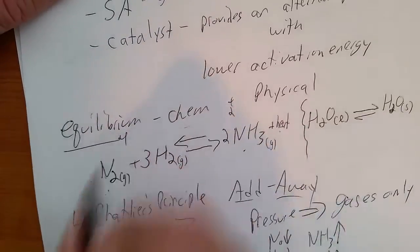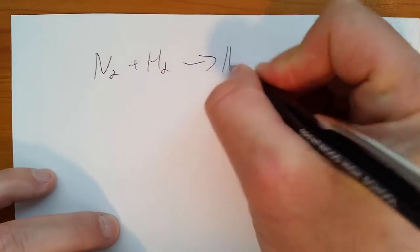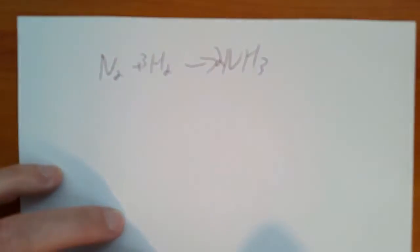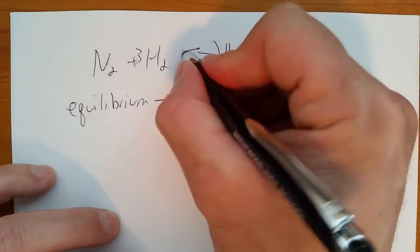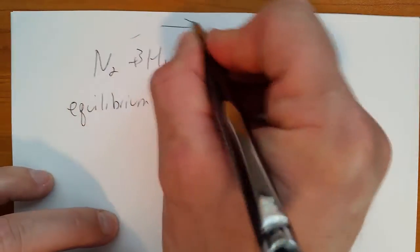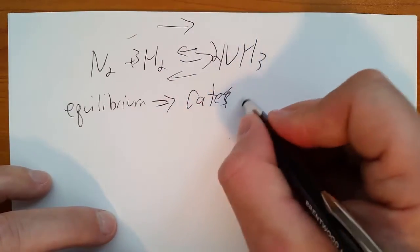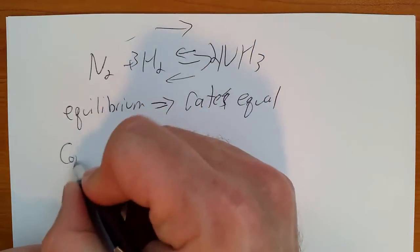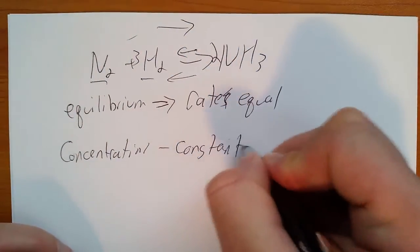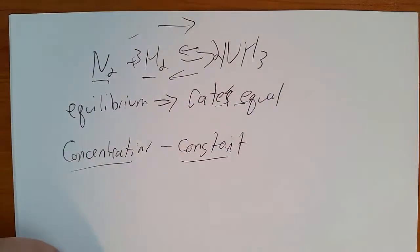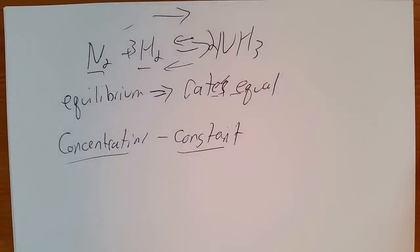One thing to go back to about equilibrium: some very important things to remember. When you have something at equilibrium — like N₂ + H₂ yielding NH₃ — equilibrium means the rates of the forward and the reverse reaction are equal. The concentration of each species remains constant: rate equal, concentration constant.